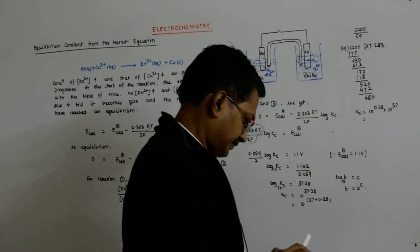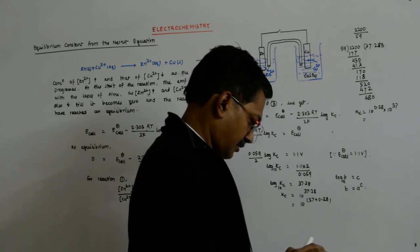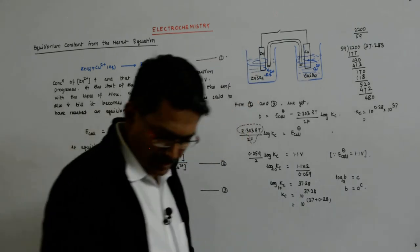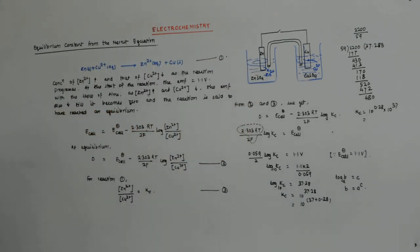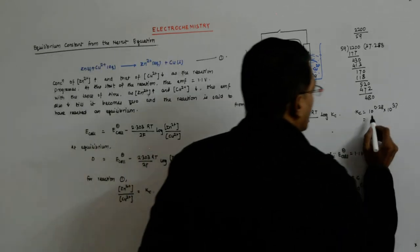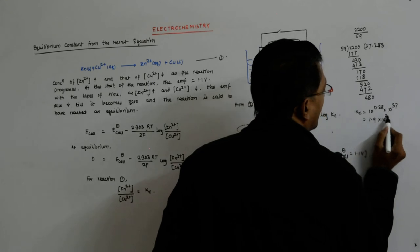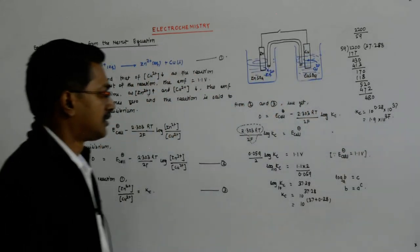10 to the power 0.28 is equal to 1.90. So it is 1.9 times 10 to the power 37. Understand?